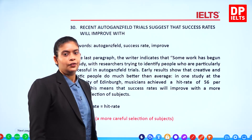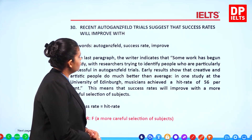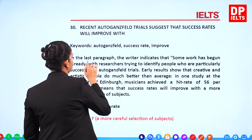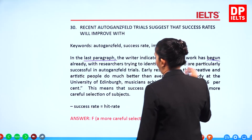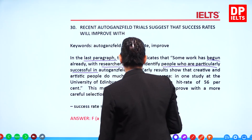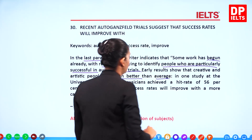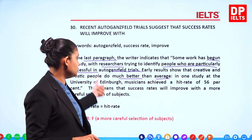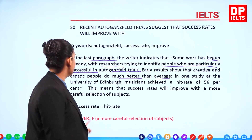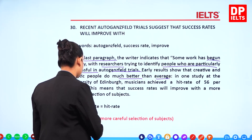Question 30: 'Recent Auto-Gansfeld trials suggest that success rates will improve with...' In the last paragraph, the writer indicates that some work has begun to identify people who are particularly successful in Auto-Gansfeld trials. Early results showed that creative and artistic people do much better than average. In one study at the University of Edinburgh, musicians achieved a hit rate of 56%. This means success rates will improve with more careful selection of subjects. The answer is F.